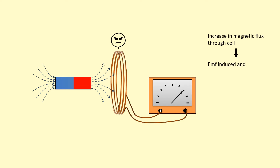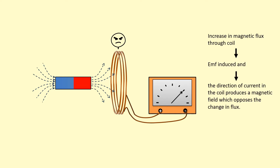The coil doesn't like this increase in flux, so it induces its own EMF. According to Lenz's Law, the EMF and the current produced flows in a direction which produces its own magnetic field that opposes the change. The key idea is the direction of the current is going to try to oppose the increase in flux — so the current flows around like this, producing a magnetic field acting towards the left.